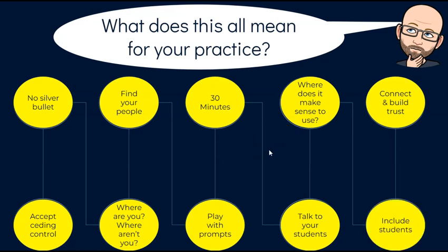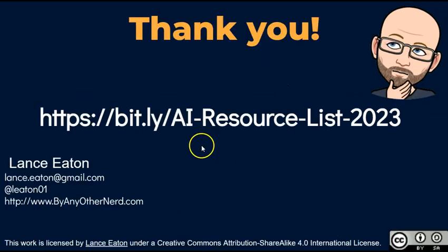And then finally — include students. I always go back to Jesse Stommel's four-word pedagogy: start by trusting students. As you start to figure this out, it's not just about talking to your students but including them — working with them to think about what makes sense for this course, for this group of people in this space. How do we use this tool appropriately in a way that supports one another's learning, as opposed to just everybody going through the moves? Those are really the things I can encourage you to think about for your practice as you go forward.